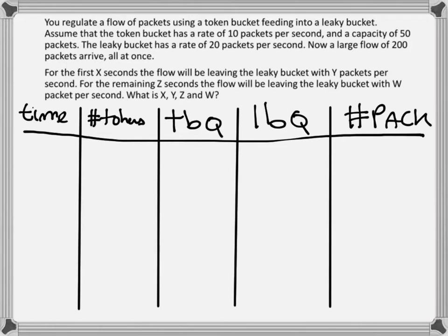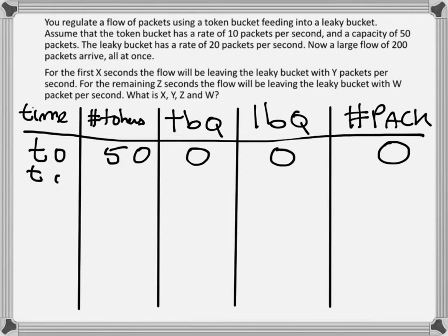Before anything happens, there are 50 tokens, nothing in the token bucket queue, nothing in the leaky bucket queue, and no packets have been processed. At time 0, the 200 packets arrive all at once — they use the 50 tokens, so no tokens will be left. Then there will be 150 packets queuing in the token bucket, and 50 — those which had a token — go down to the leaky bucket, with still 0 packets processed.